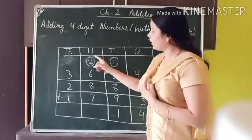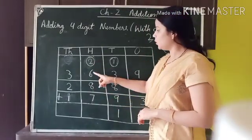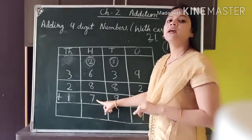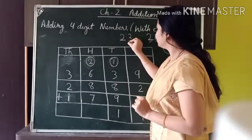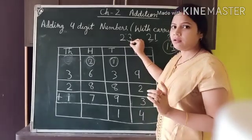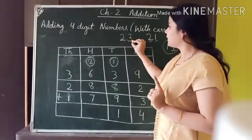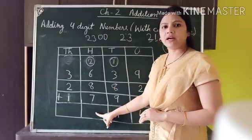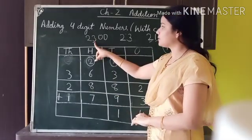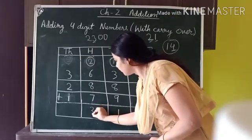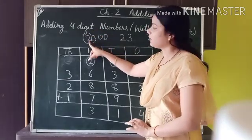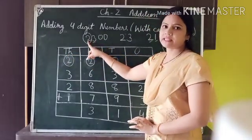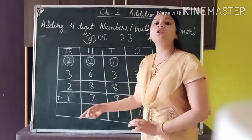Now adding at the hundreds position: two plus six is eight, eight plus eight is sixteen, sixteen plus seven is twenty-three. This means 23 hundreds. In 23 hundreds, three is placed at the hundreds position, so we write 3 here. Two is placed at the thousands position, so we carry forward 2 to the thousands place.